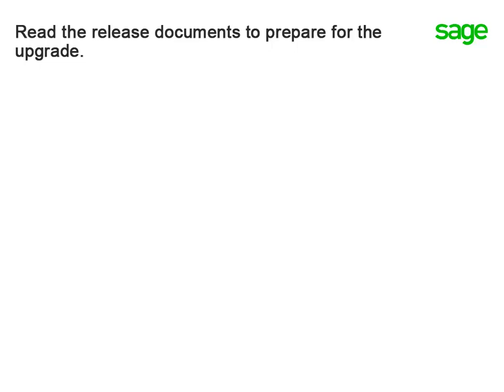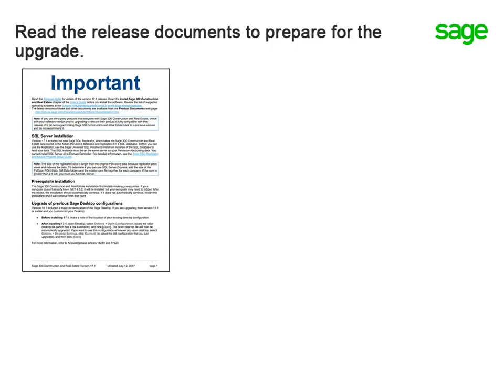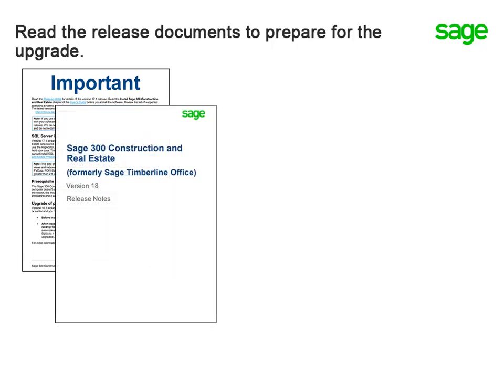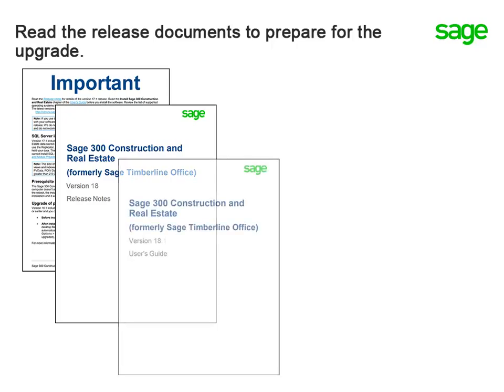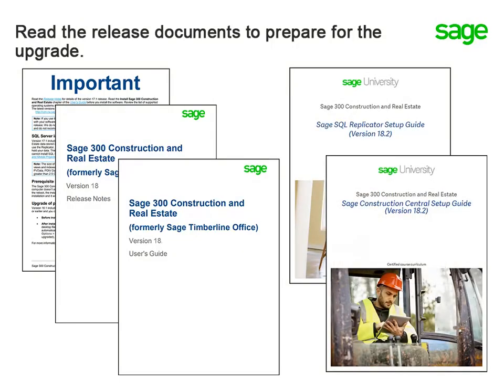In addition to the System Requirements document, you should read these documents to prepare for your software upgrade: the Important Document, which contains critical information to be aware of before you upgrade; the Release Notes, which outlines what's changed in the software; and the User's Guide, which contains technical details about upgrading. To learn how to replicate your data or how to implement mobile intelligence, read the Setup Guides for Sage SQL Replicator and Sage Construction Central.